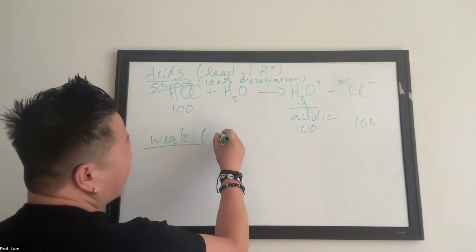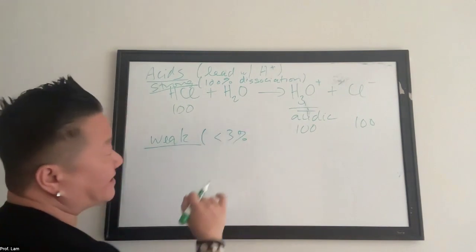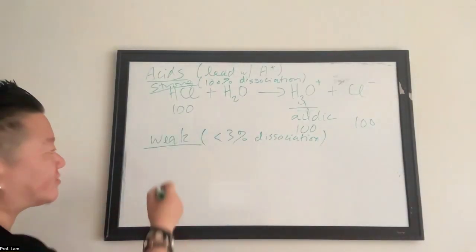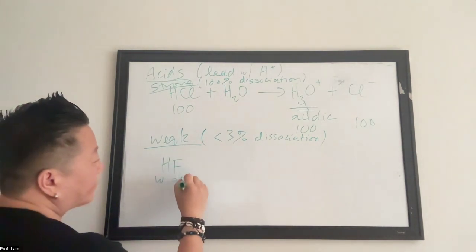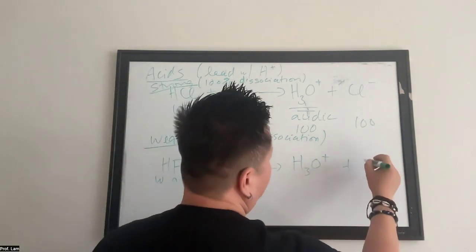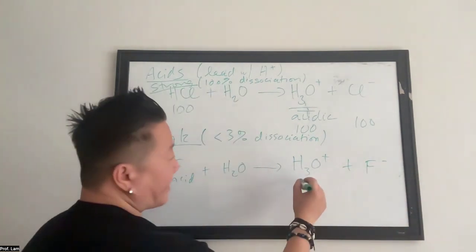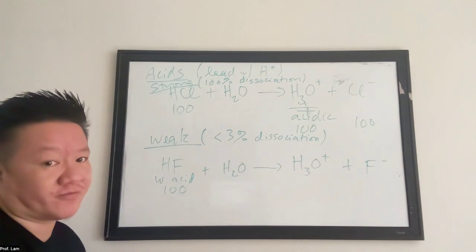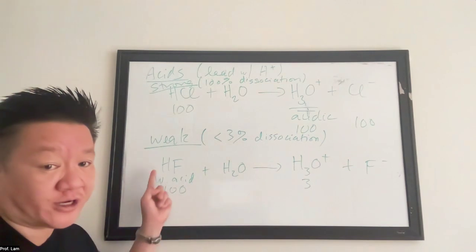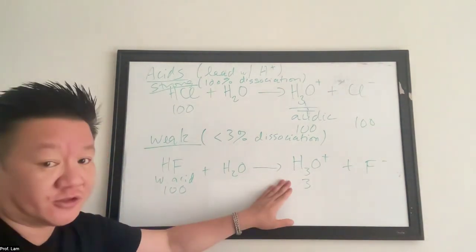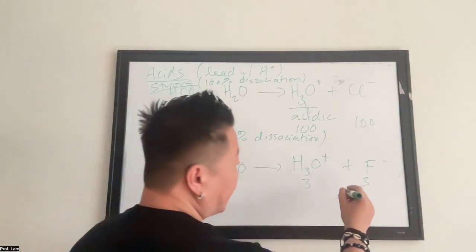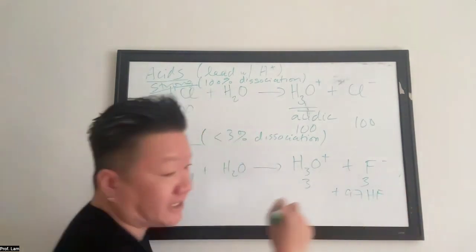For weak acid, you have less than 3%. That's the highest, it's less than 3% dissociation. So that's why it's considered weak. Something like HF, this is a weak acid. So when you put it in water, you'll still get hydronium, but not as many. So you only have, if you had 100 HF molecules, you only create three hydronium. So only three out of the 100 of HF molecules will dissociate to form hydronium. And you also get three fluorides, meaning you still have 97 intact HF.